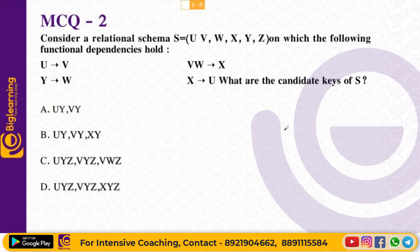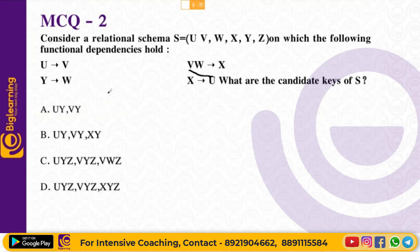Next question: consider the relation schema S = {U, V, W, X, Y, Z} on which the following functional dependencies hold: U→V, VW→X, Y→W, and X→U. What are the candidate keys of S?